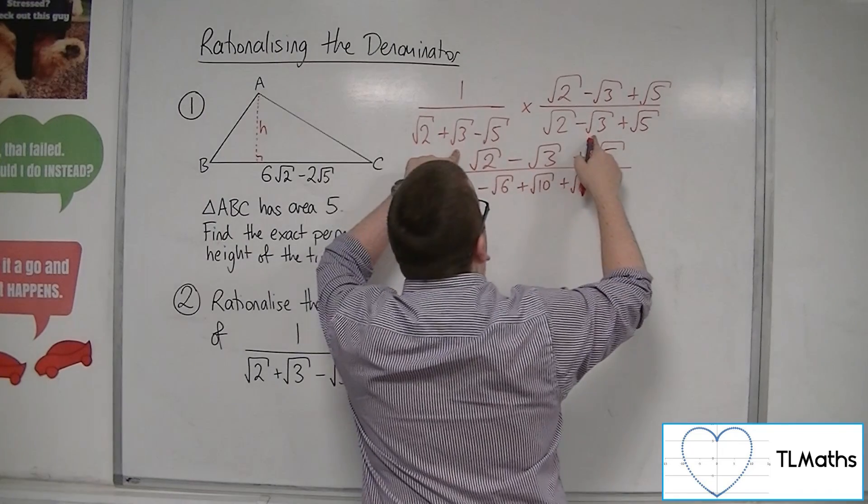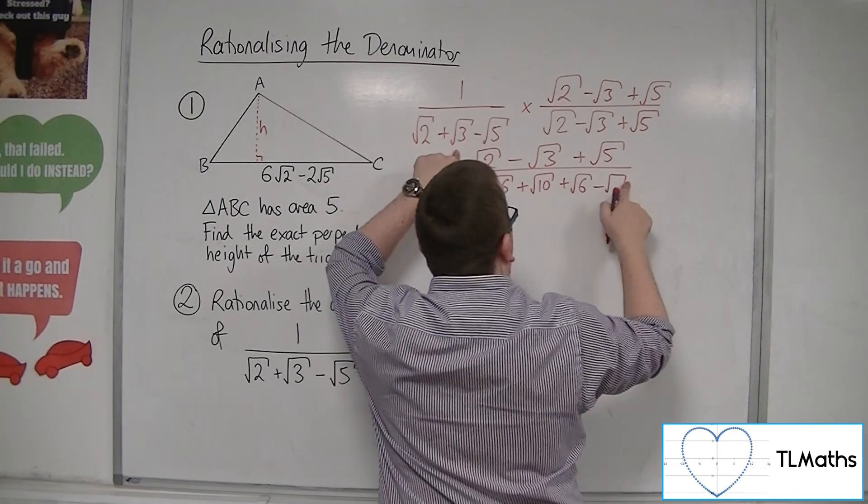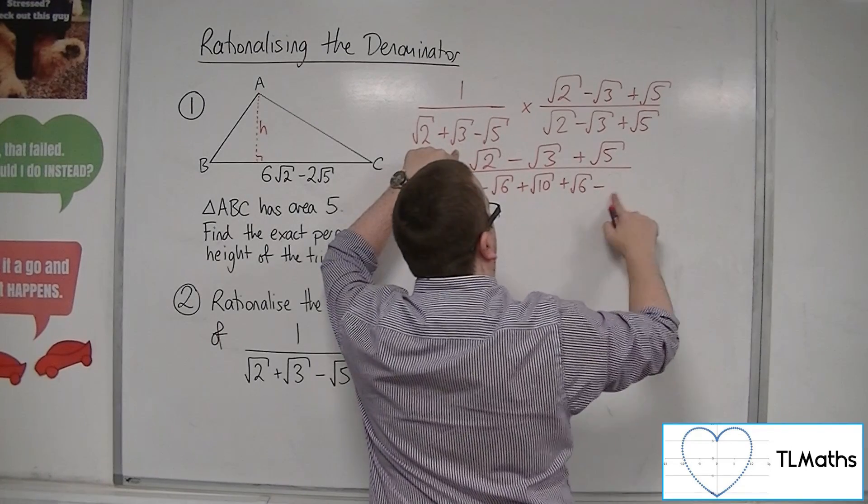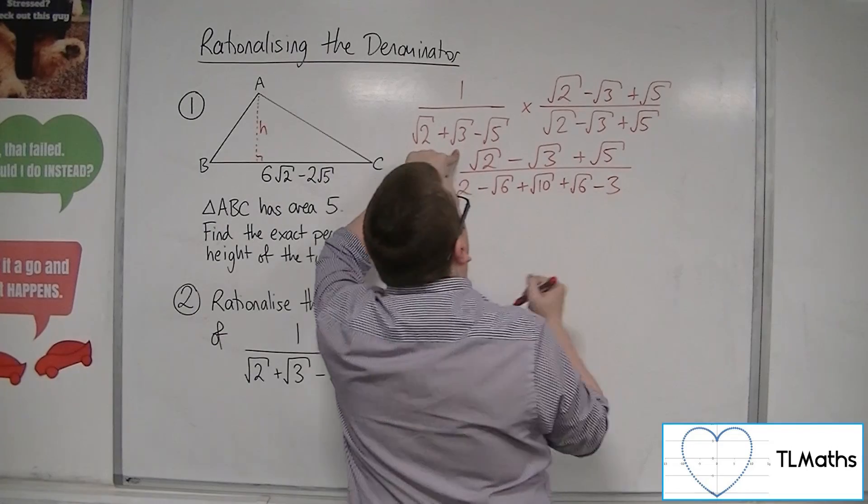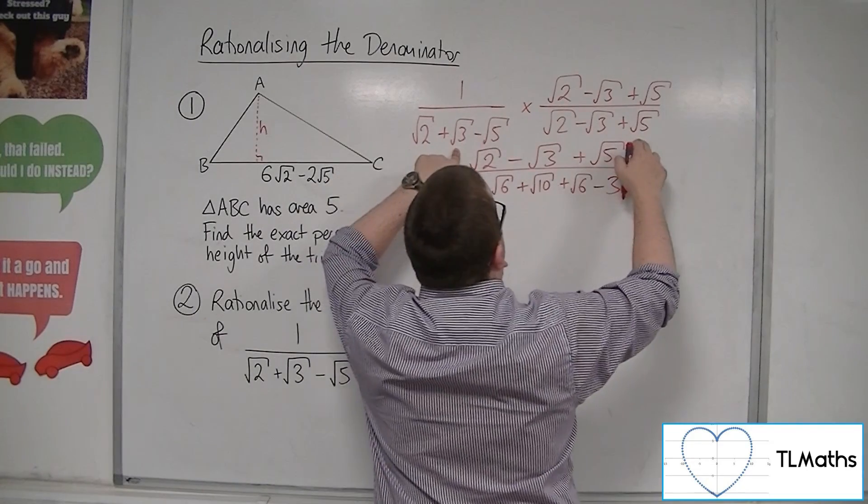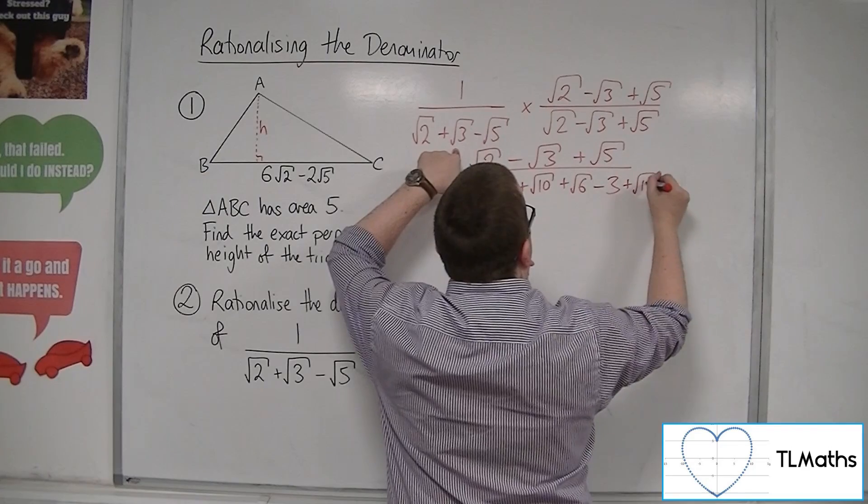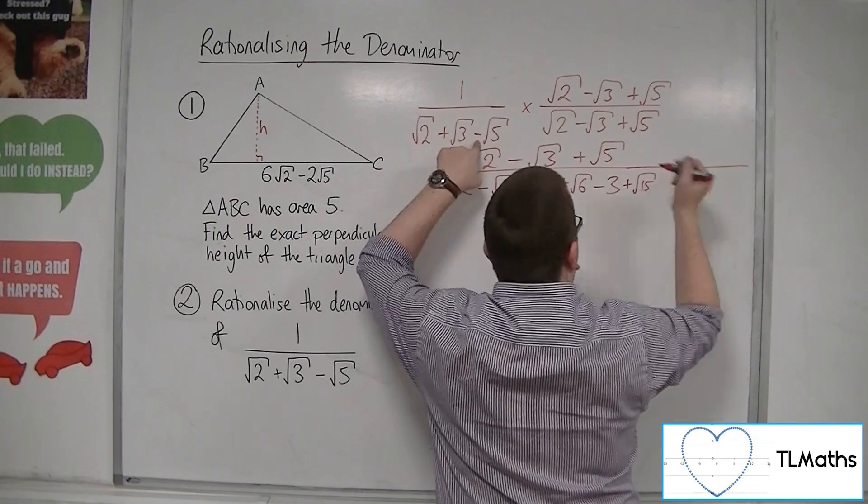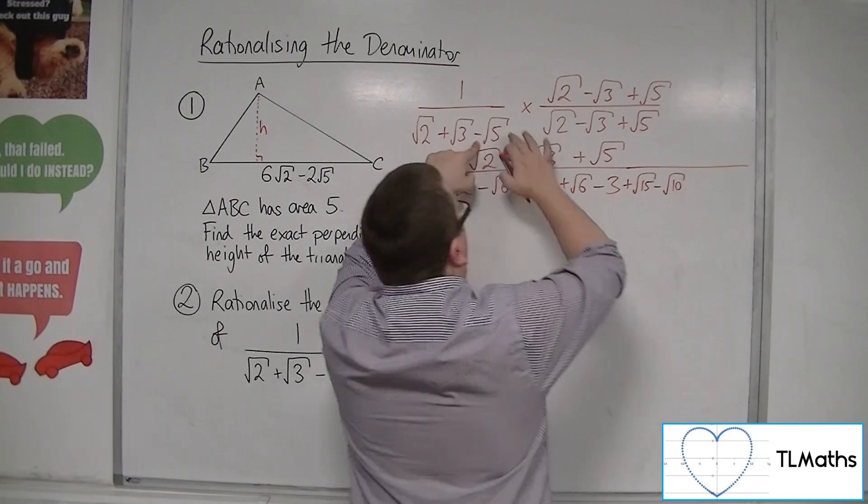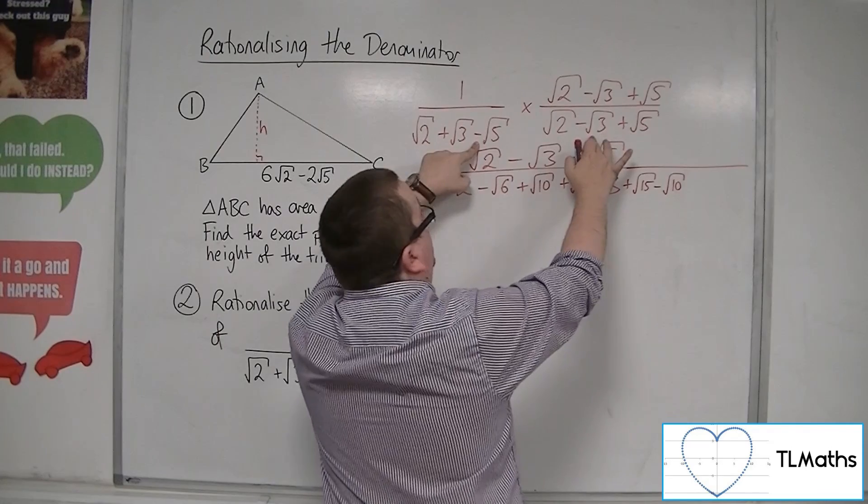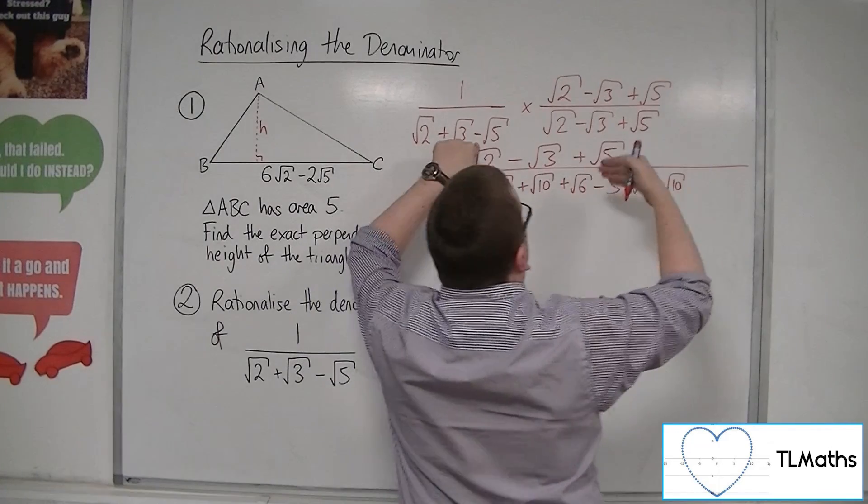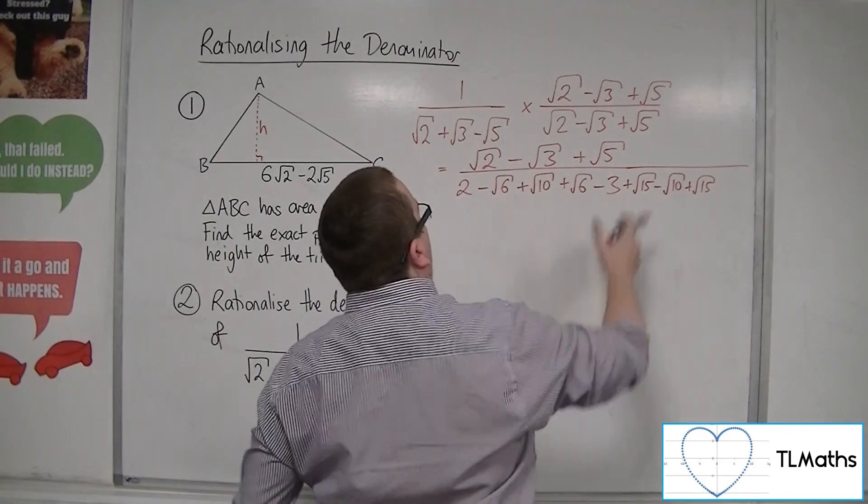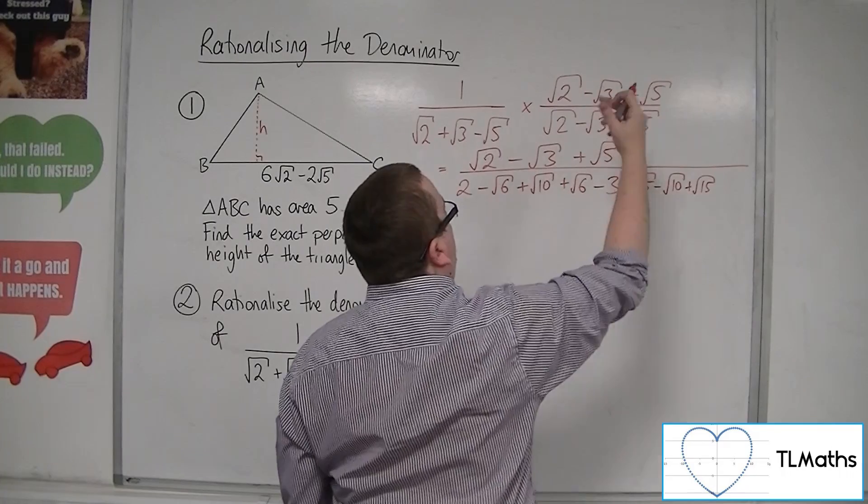Root 3 times minus root 3 is minus 3. And root 3 times root 5 is root 15. I've also got minus root 5 times root 2, so minus root 10. Minus root 5 times minus root 3, so plus root 15. And minus root 5 times root 5 is minus 5.